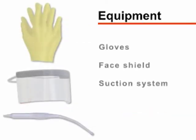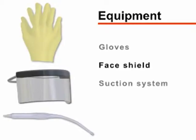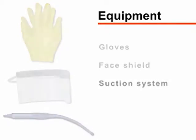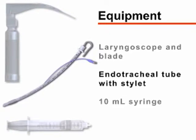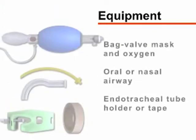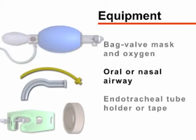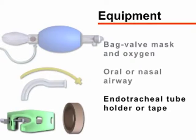Begin by gathering the required equipment. You will need gloves, a protective face shield, and a working suction system, a laryngoscope with appropriate blade, an endotracheal tube with stylet, and a 10 milliliter syringe. You will also need a bag valve mask attached to oxygen, an oral or nasal airway, and tape or an endotracheal tube holder.